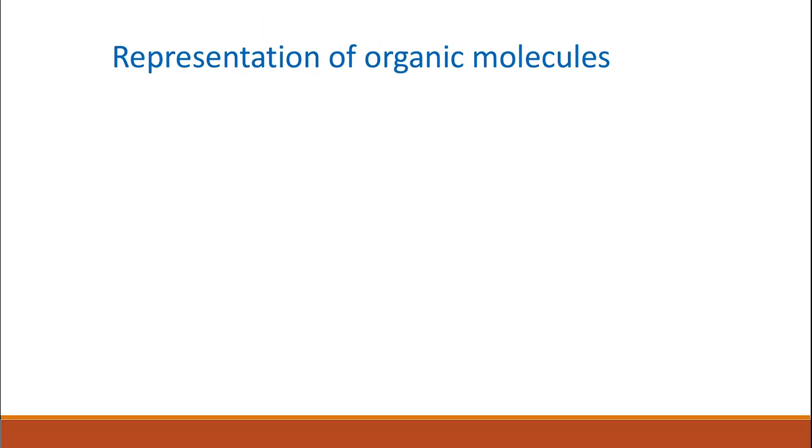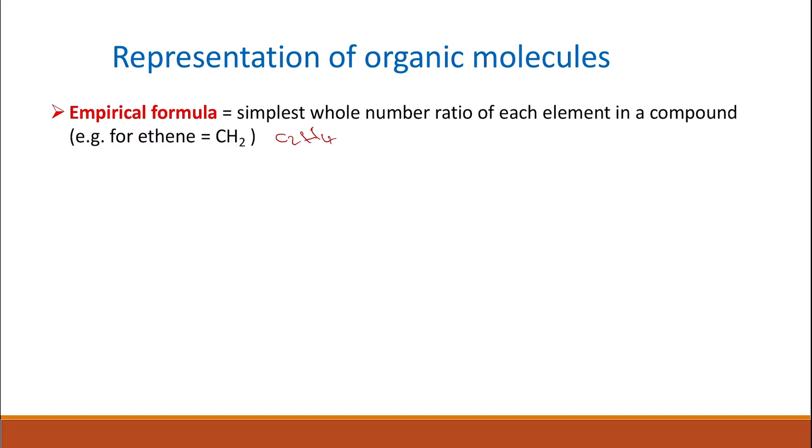So how can we represent our organic molecules? The first formula we use is the empirical formula, which is the simplest whole number ratio of each element in a compound. For example, if you have ethene, which is C2H4, then the empirical formula will be CH2 because this is the simplest whole number ratio of all of the elements.